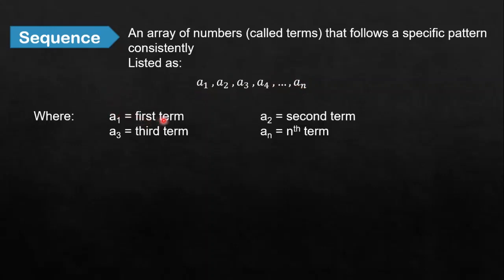a_sub_1 is the first term, a_sub_2 is the second term, a_sub_3 is the third term, a_sub_n is the nth term. So depending upon n, it will tell us the end of the sequence. If it is a_sub_6, that means it only goes up to 6 terms.